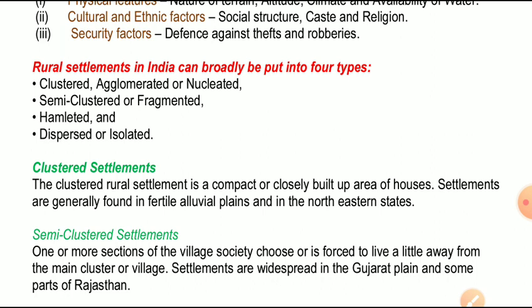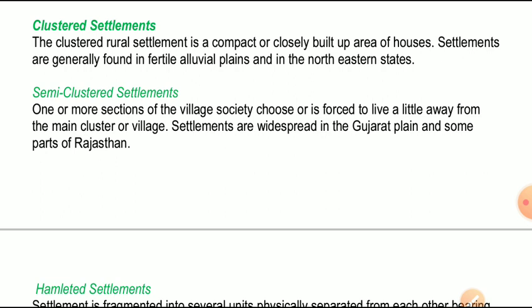Second is semi-clustered settlement. One or more sections of the village society choose or is forced to live a little away from the main cluster. These settlements are widespread in the Gujarat plains and some parts of Rajasthan. Semi-clustered मतलब जो बहुत ज़्यादा compact नहीं होते - इनमें जातियों या community के हिसाब से लोग एक जगह रहते हैं और कुछ विशेष community के लोगों को एक separate इलाका दे दिया जाता है। इसमें different sections of the society अलग-अलग जगह पर रहते हैं।